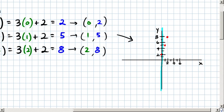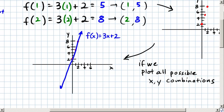Now, if we plot all possible x-y combinations, in other words, every single possible ordered pair that satisfies these conditions, we'll get the line shown in blue.